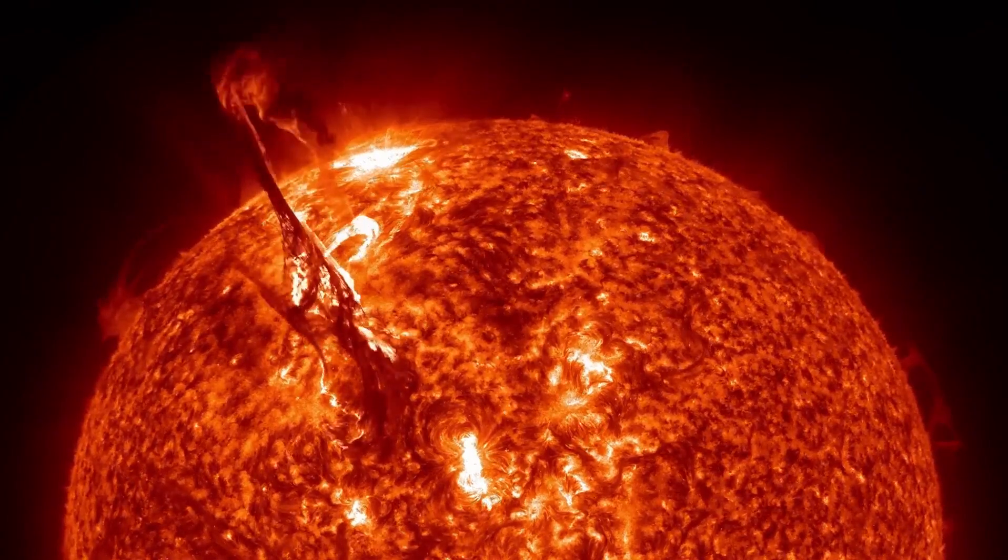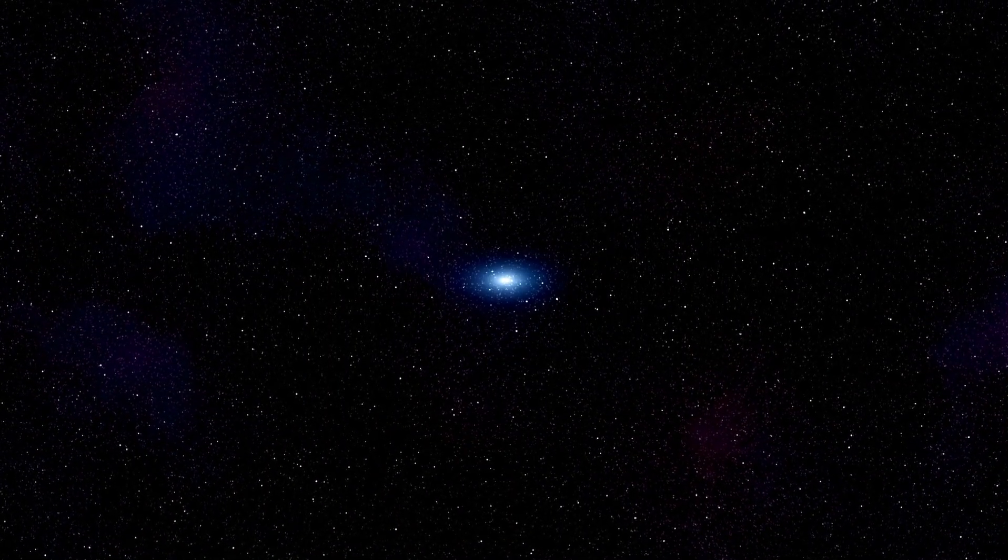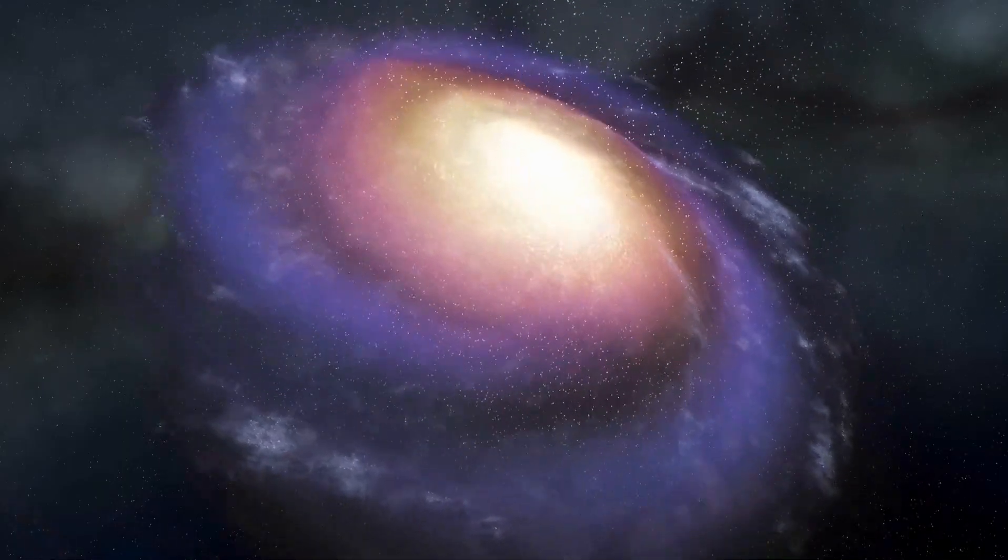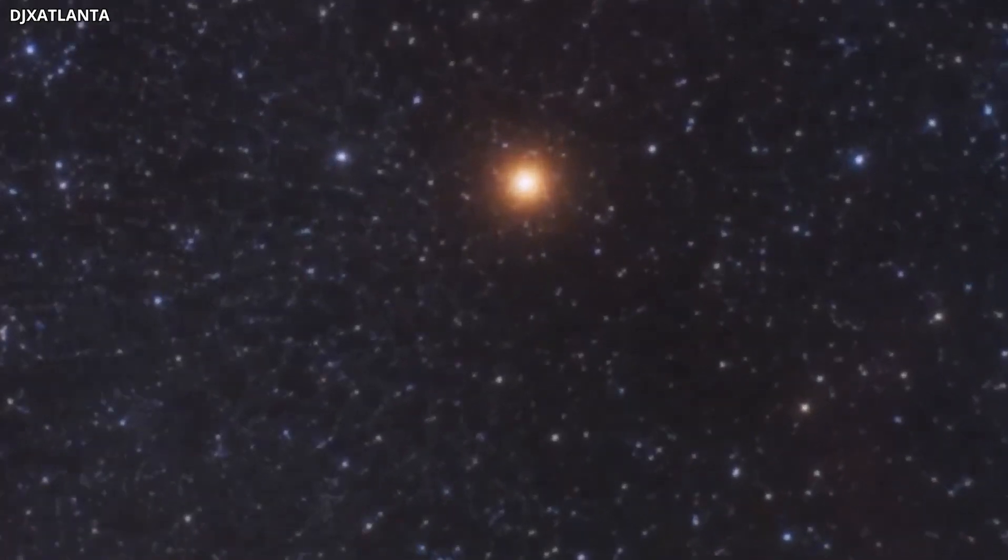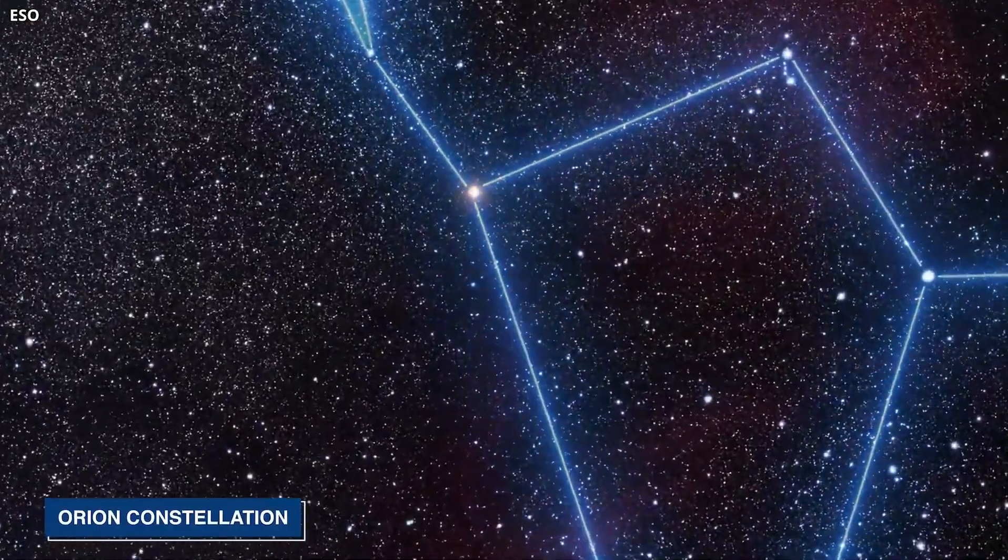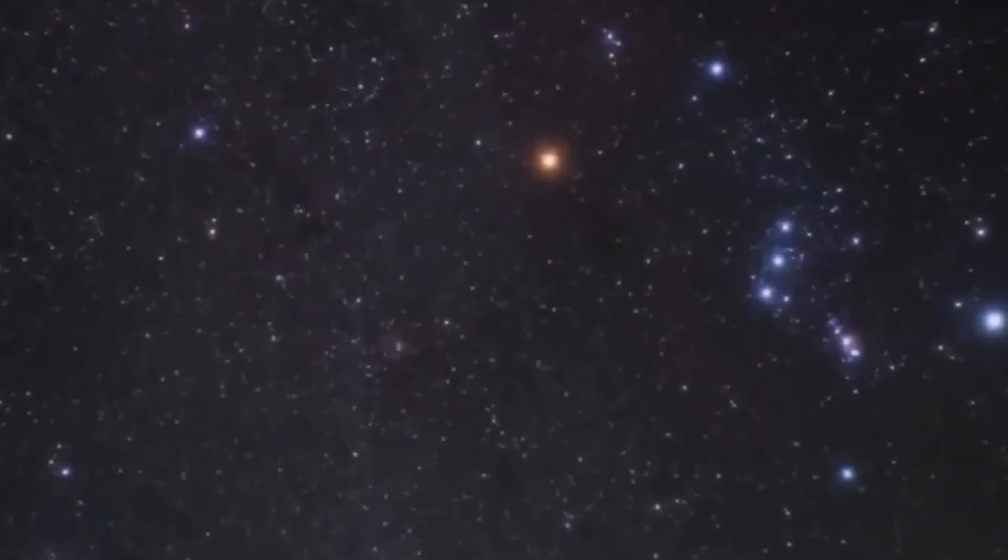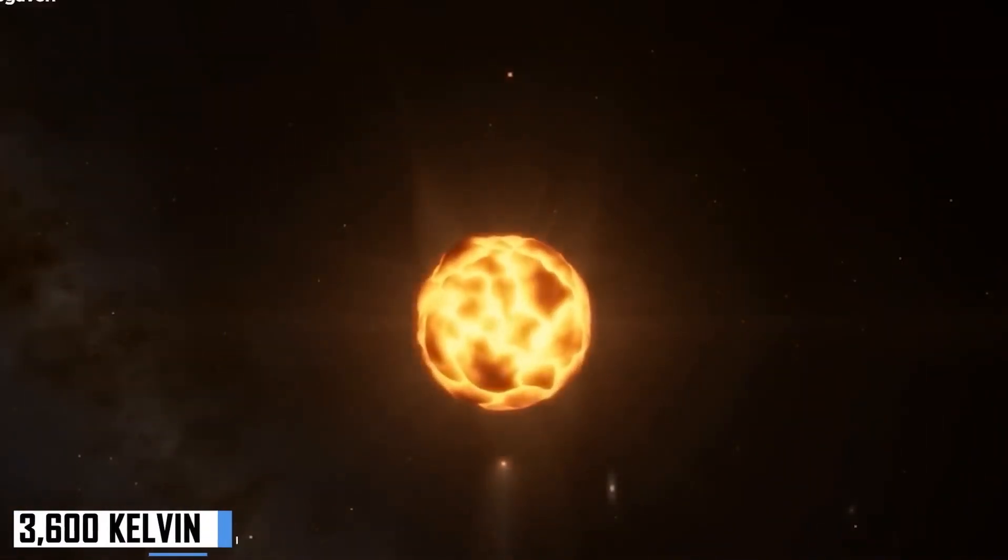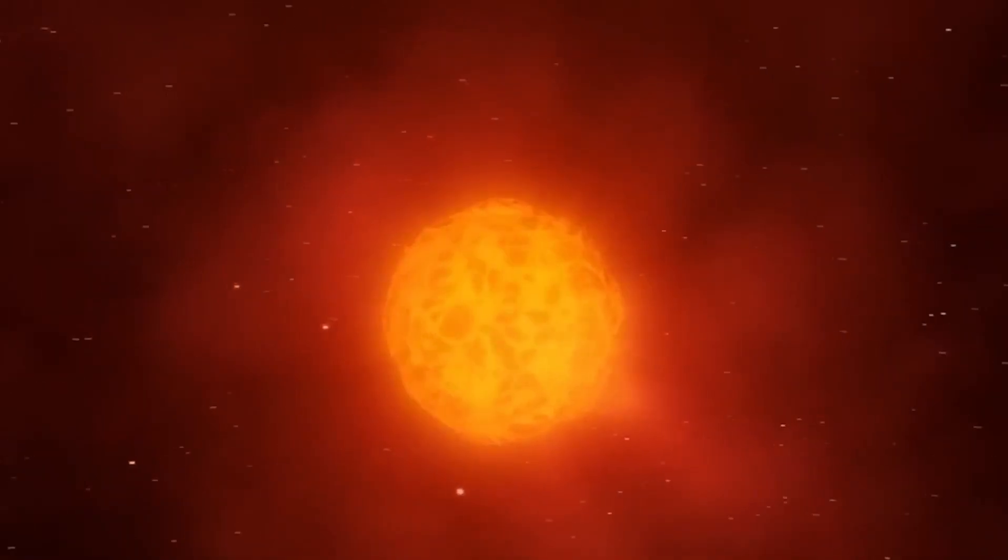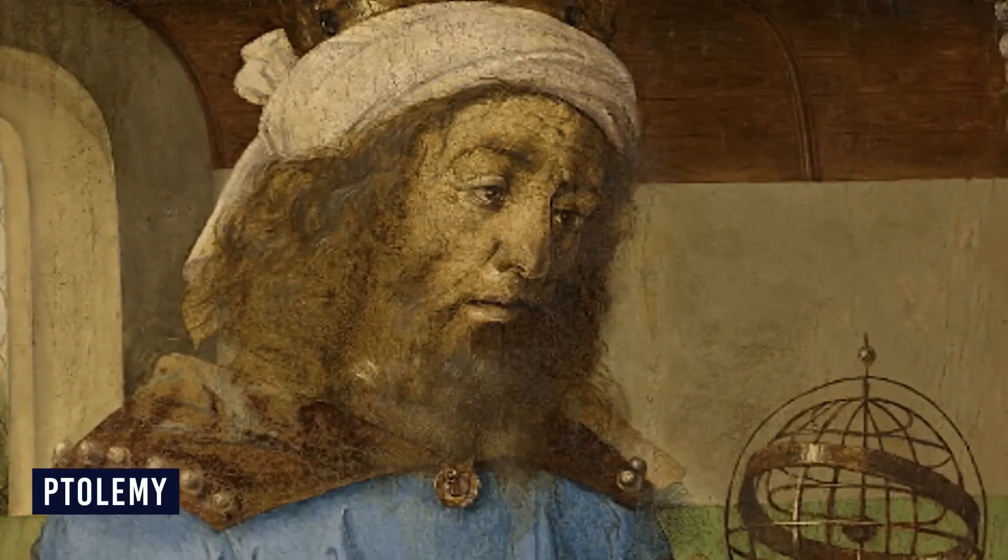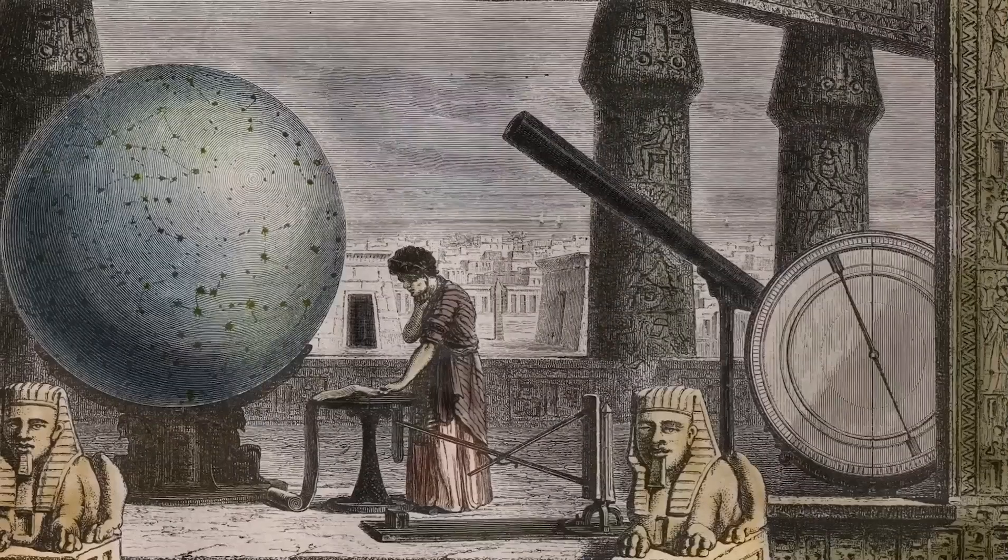A supernova is a powerful and luminous explosion of a star. Scientists have explained that a supernova occurs during the last evolutionary stages of a massive star or when a white dwarf is triggered into runaway nuclear fusion. What then happens is that the original object, known as a progenitor, would either collapse into a neutron star or black hole, or be utterly destroyed to form a diffuse nebula. If Betelgeuse explodes today, the peak optical luminosity of the supernova can be compared to that of an entire galaxy before fading after several weeks or months. The sheer sight of this event would either scare or excite its viewers.